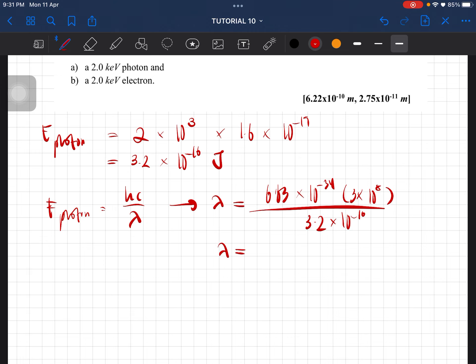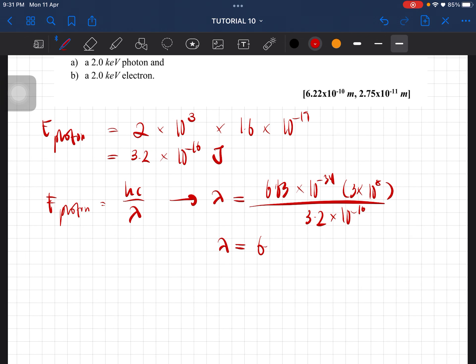So you should get the de Broglie wavelength to be equal to 6.22 times 10 negative 10 meter.